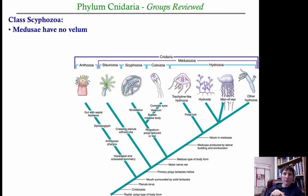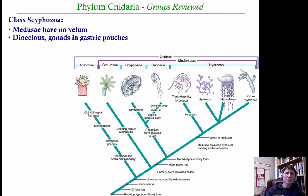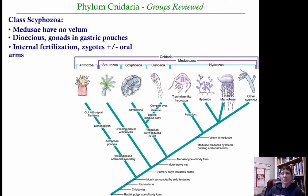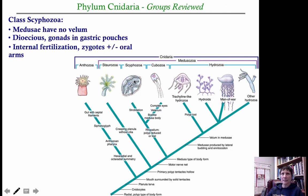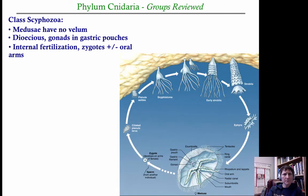The class Scyphozoa, sister to the Cubozoa, are primarily medusan forms but lack the velum on the inside of their bells, unlike cubozoans. They tend to be dioecious with separate sexes, and the gonads are usually very obvious in their gastric pouches. They have internal fertilization: males release sperm into the water column, females take them up, fertilize their eggs, and the eggs are held on the oral arms on the underside of the bell until they reach a particular size and stage, then released into the water column.